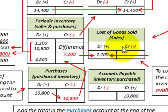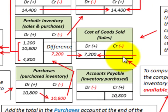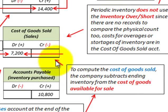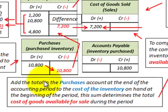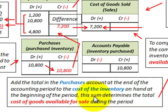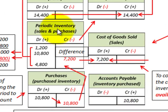Let's review the cost of goods sold calculation. To compute cost of goods sold, the company subtracts ending inventory from the cost of goods available for sale. Cost of goods available for sale is determined by adding the total in the purchases account at the end of the period to the cost of inventory on hand at the beginning of the period. This sum gives the total cost of goods available for sale during the period.